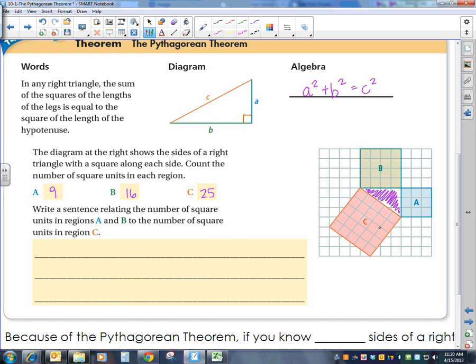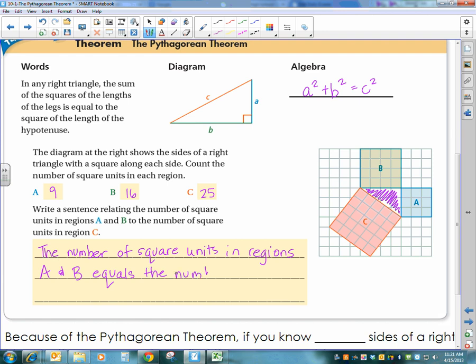So to put this actual picture in words, write a sentence relating the number of square units in regions A and B to the number of square units in region C. Then we're going to say the number of square units in regions A and B equals the number of square units in region C. So hopefully that picture will help you understand that and remember, understand why we're squaring each side and not just the side itself.